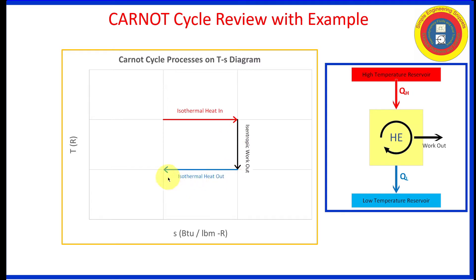Third process is isothermal heat rejection, and to complete the cycle, we need to put some work back in, and we're going to do that isentropically with a perfect pump. So those are the four processes as shown on the TS diagram.